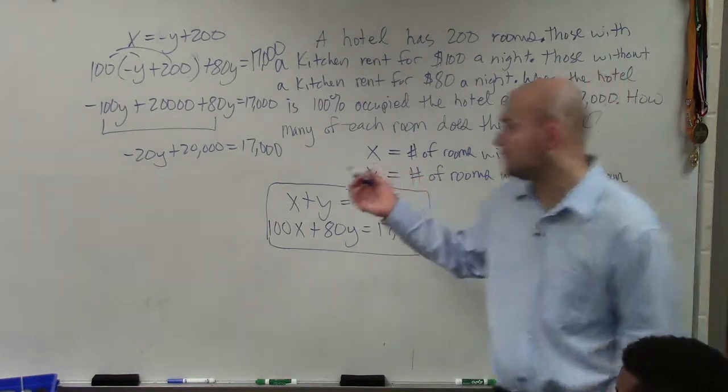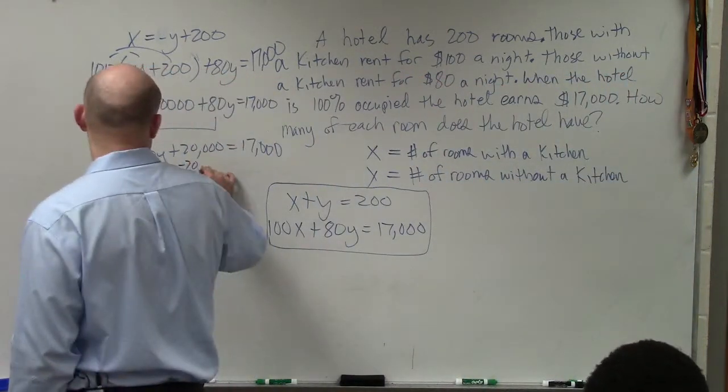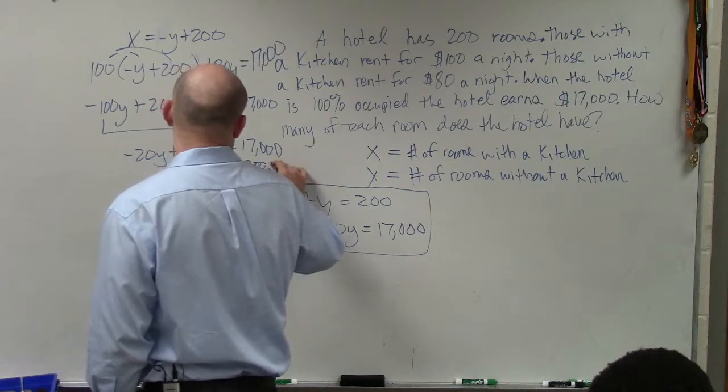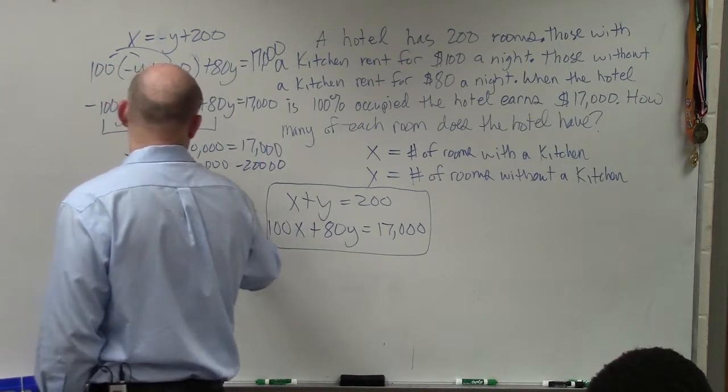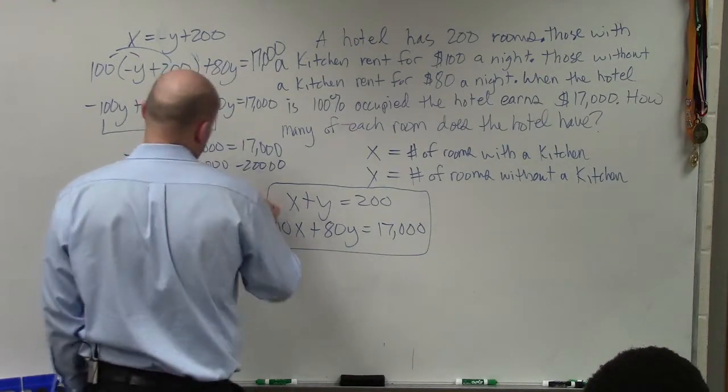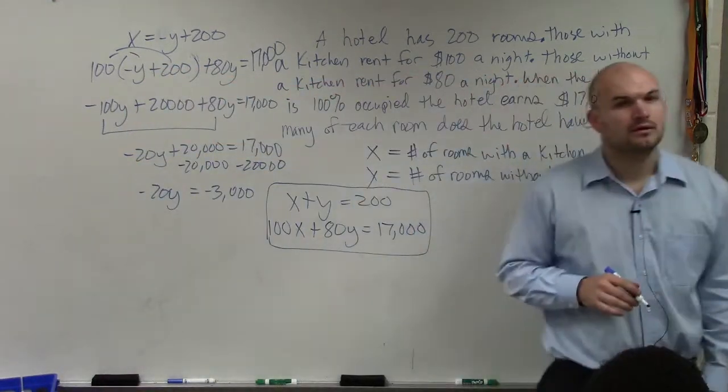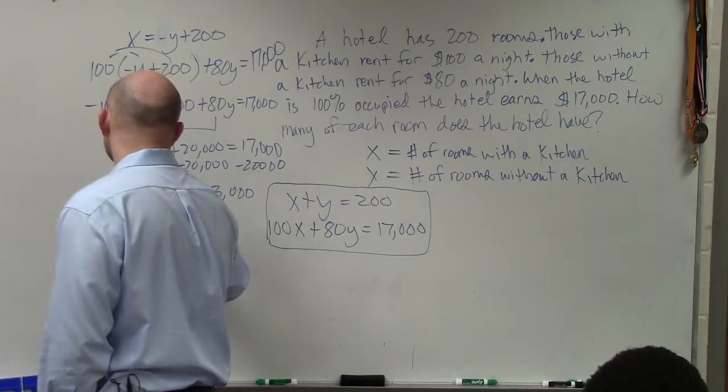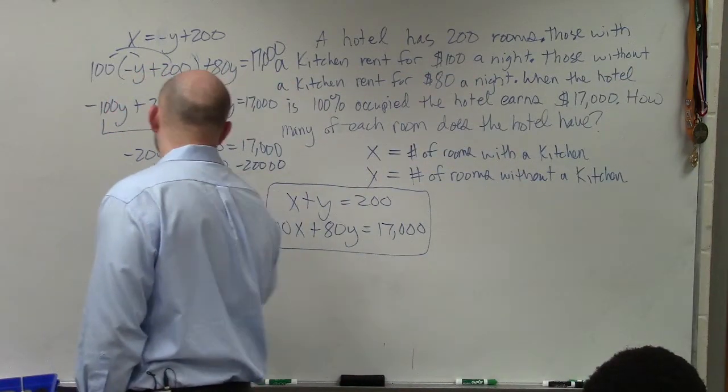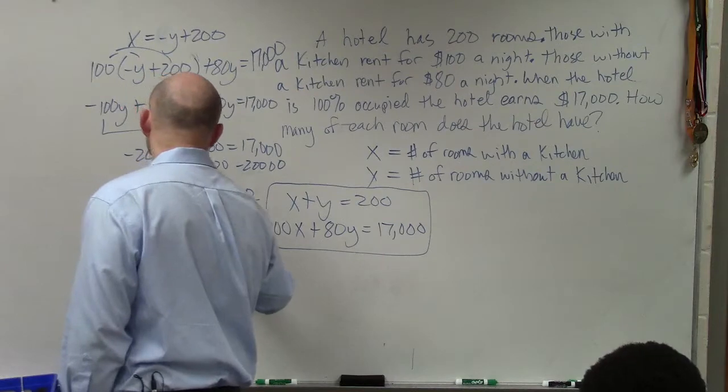And now I'm just solving for y. So I'll subtract 20,000. So I have negative 20y is equal to negative 3,000. Then to solve for y, I'll divide by negative 20 on both sides. And I get y equals 150.